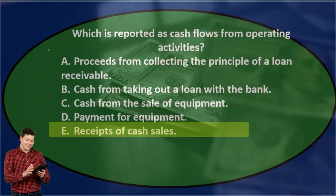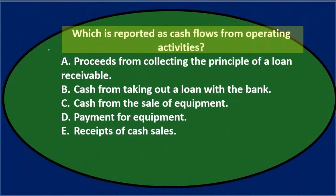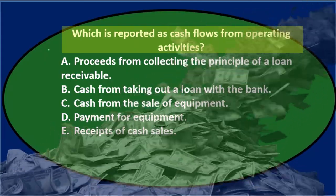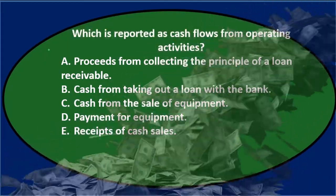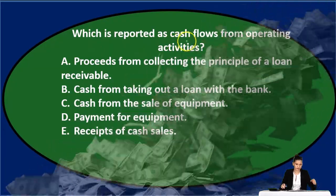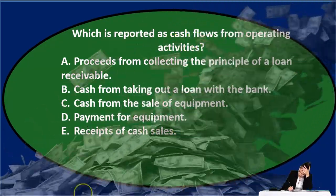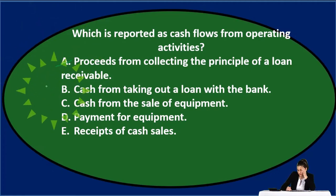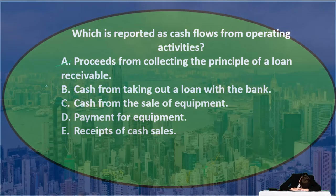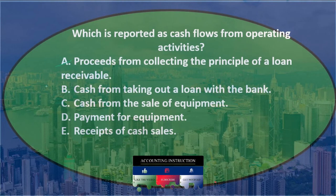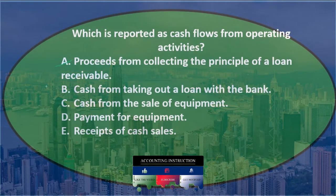Let's use the process of elimination — which is reported on cash flows from operating activities? Option A: proceeds from collecting the principal of a loan receivable. The journal entry would be to debit cash and credit the loan receivable. That doesn't look like an operating activity because there's nothing related to the income statement. Option B: cash from taking out a loan with a bank — debit cash, credit loan payable, a liability. Neither of those are income statement accounts, so it's not operating. That looks like a financing activity.